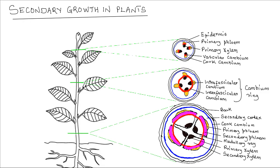Secondary growth in plants is due to the activities of the cambium or lateral meristems. Secondary growth brings about an increase in the thickness of the shoot and the roots, and hence is also known as secondary thickening. Secondary growth occurs mainly in dicotyledonous plants that have cambium tissues.